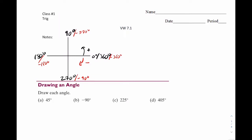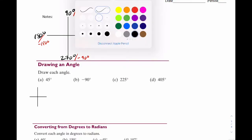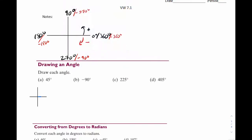So let's go to our first example — it says draw an angle of 45 degrees. To make it easier, I'll just draw your x, y-axis like this. You can actually use the x-axis as the first side, and then rotate your other leg up 45 degrees. And there's your answer.